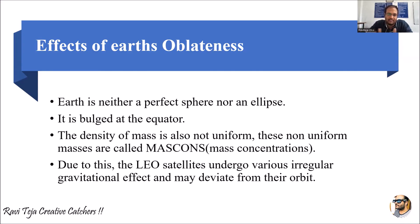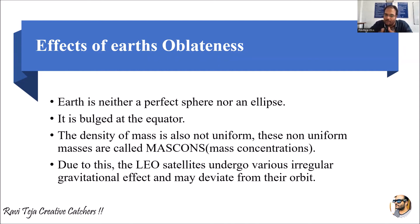The density of mass is also not uniform, and these non-uniform masses are all called mass cons — mass concentrations. The Earth is not in a proper circle shape, not in an ellipse; it will be bulging at the equator or the middle, and the density of the Earth or globe is also not uniform. The mass is not at all uniform, and these non-uniform masses are called mass concentrations.